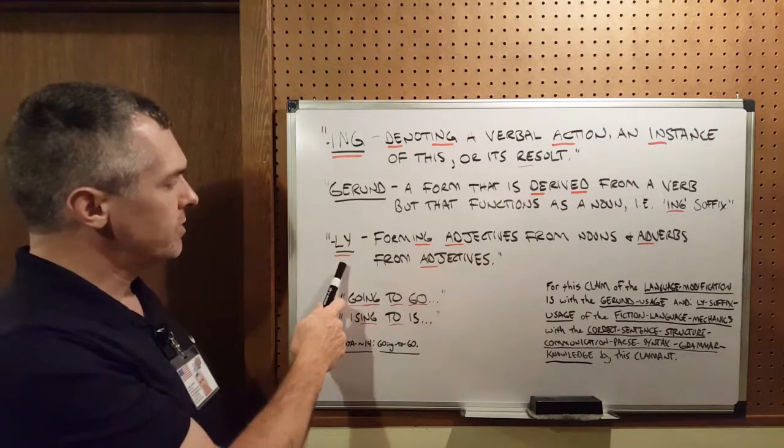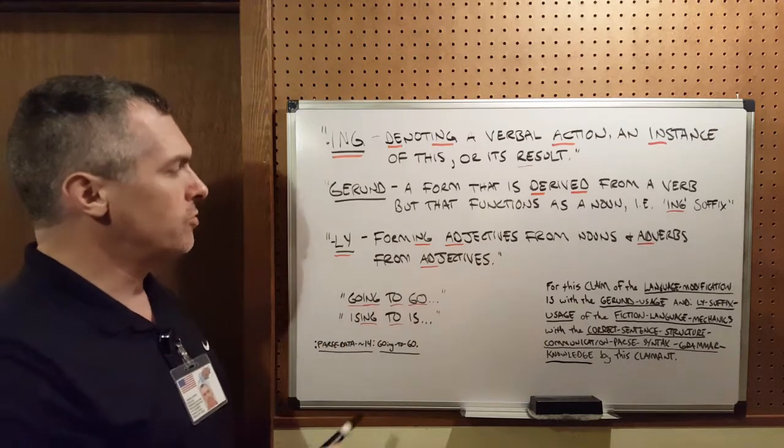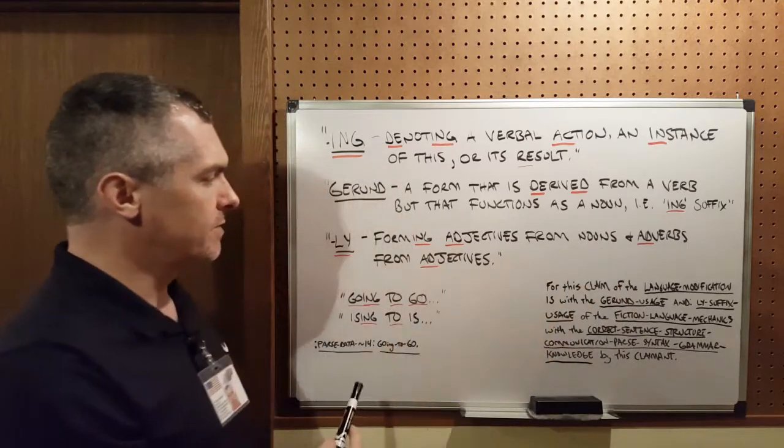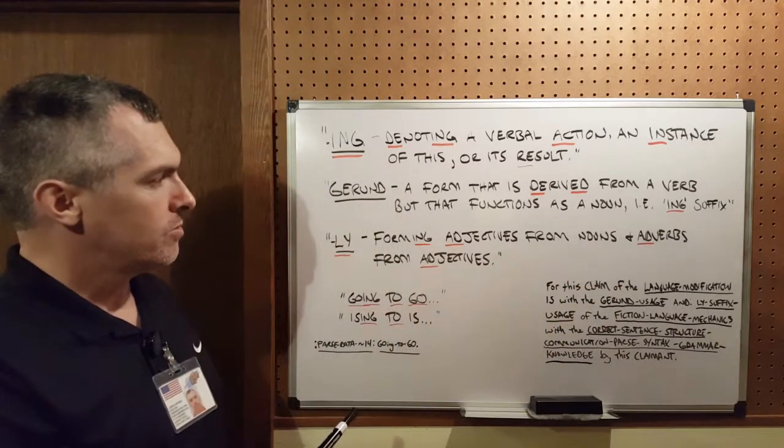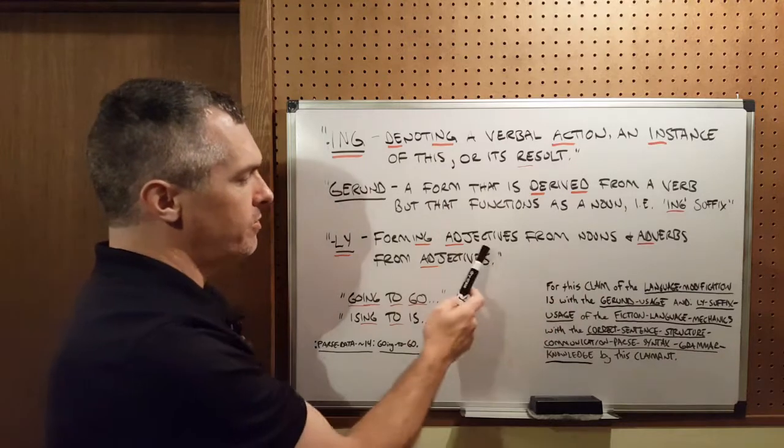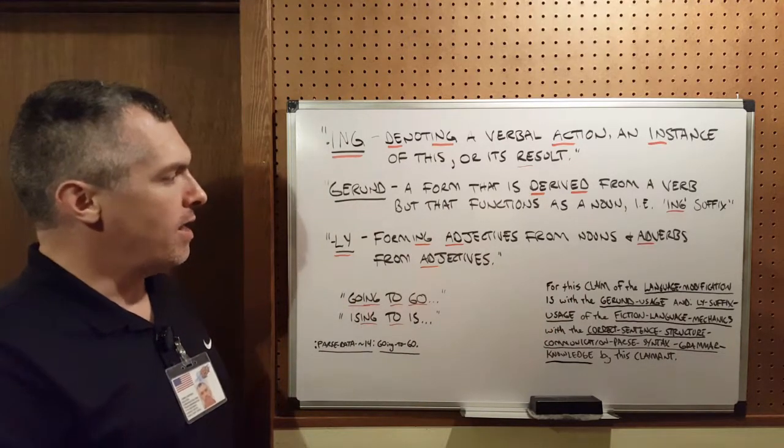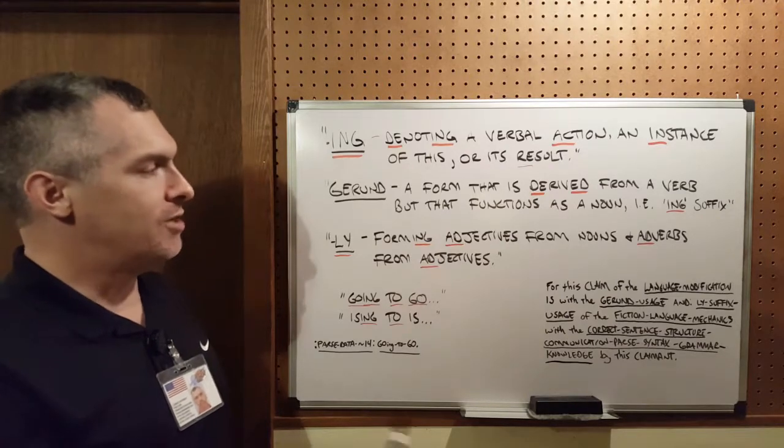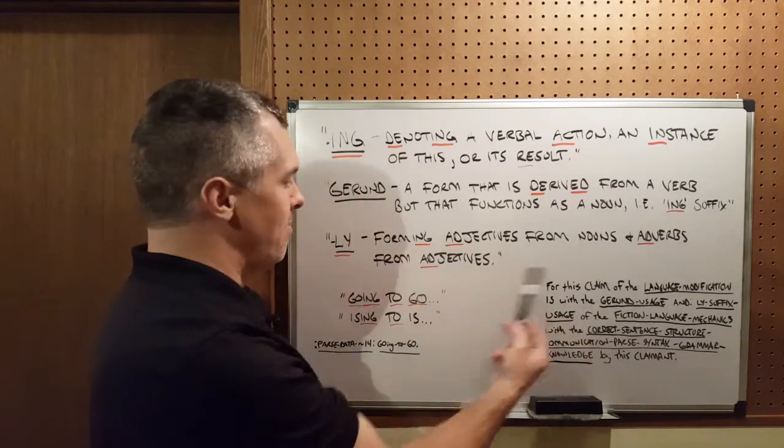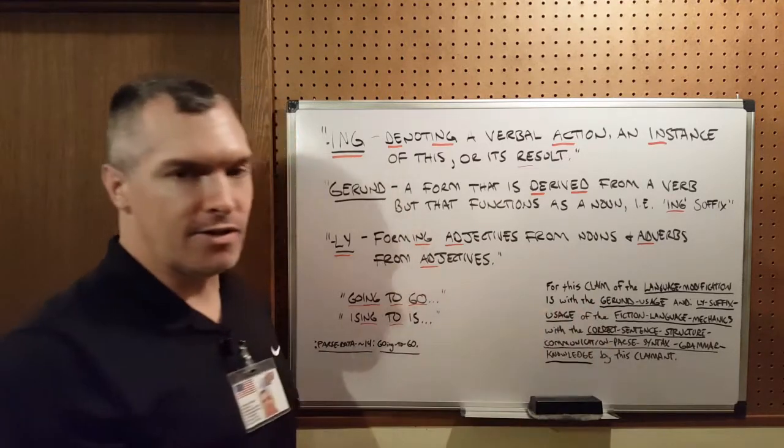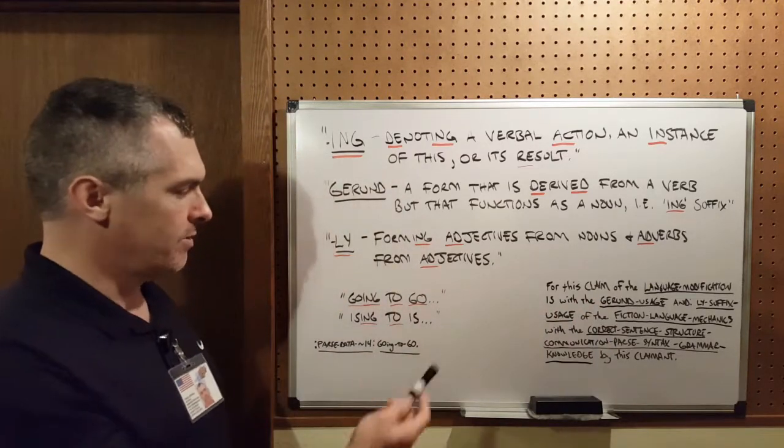Moving on to the suffix ly, Google defines it as forming adjectives from nouns and adverbs from adjectives. So you're modifying a noun into an adjective by using ly, and then you're double modifying by modifying an adjective into an adverb. Language fraud.